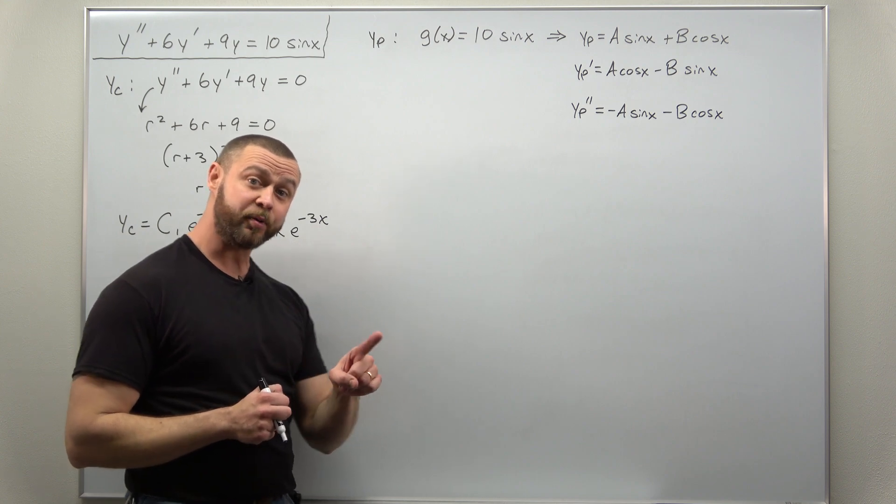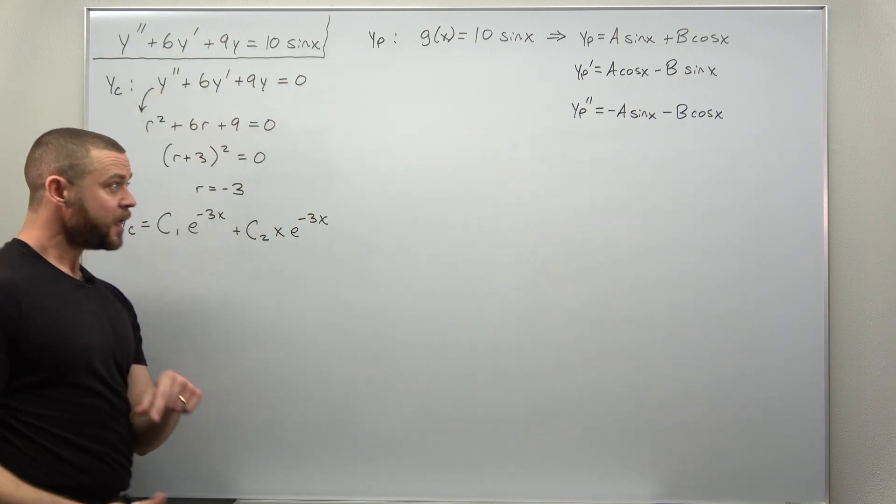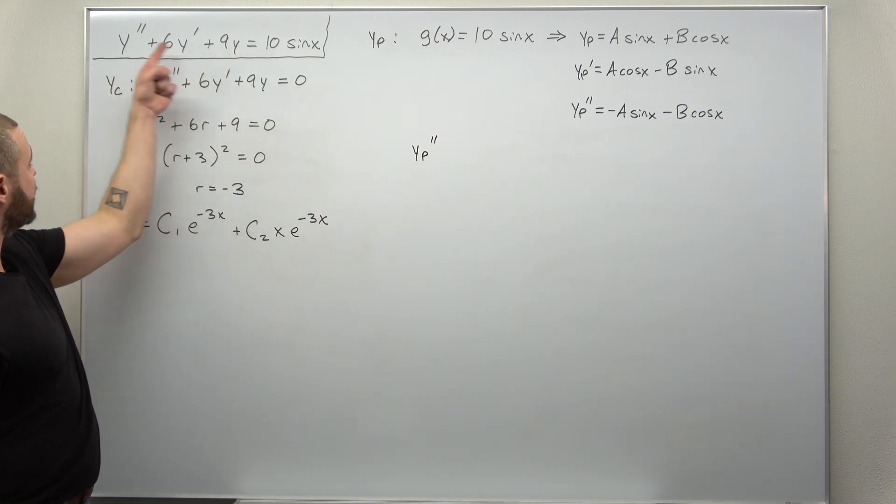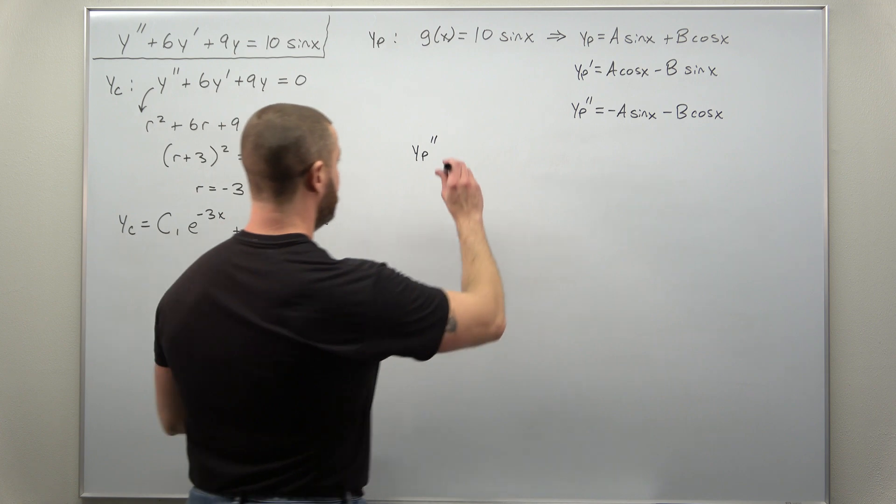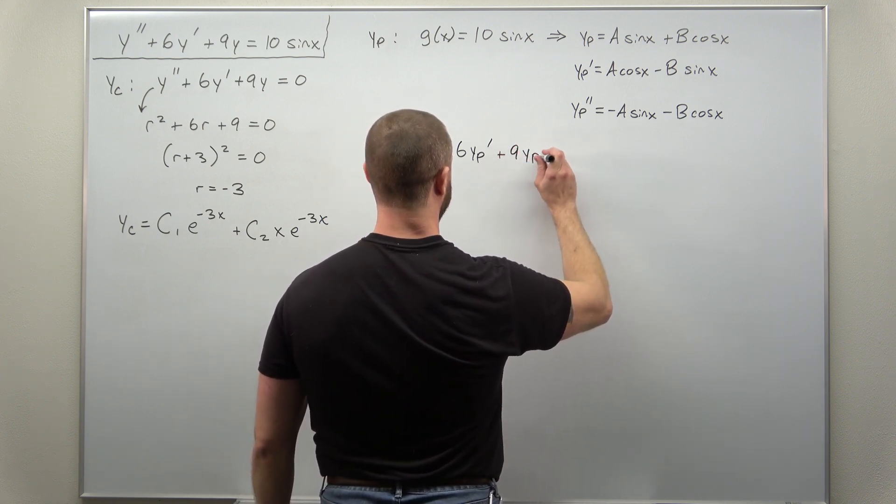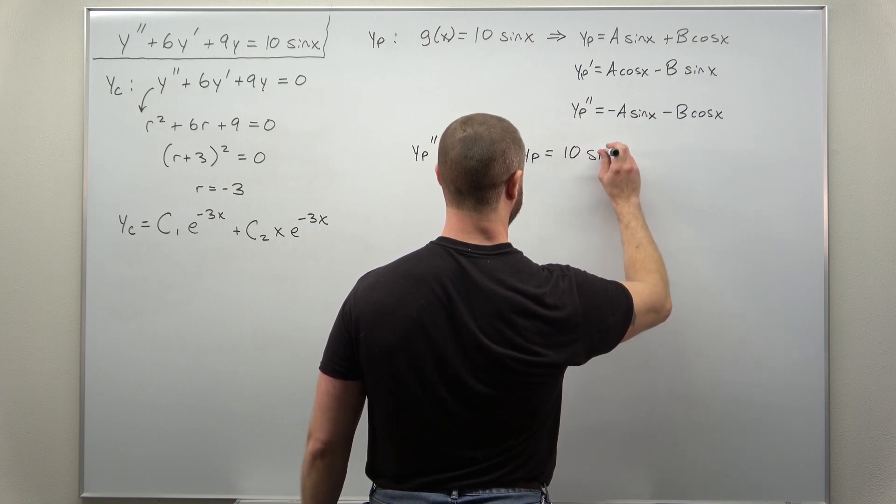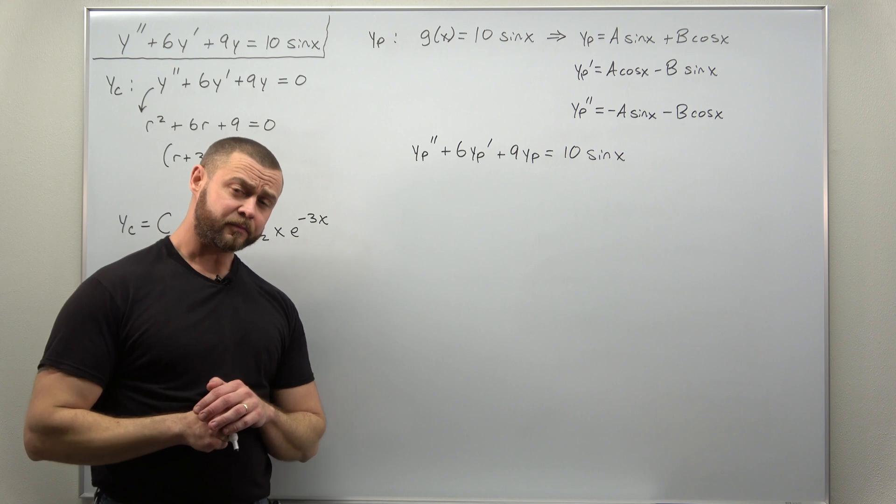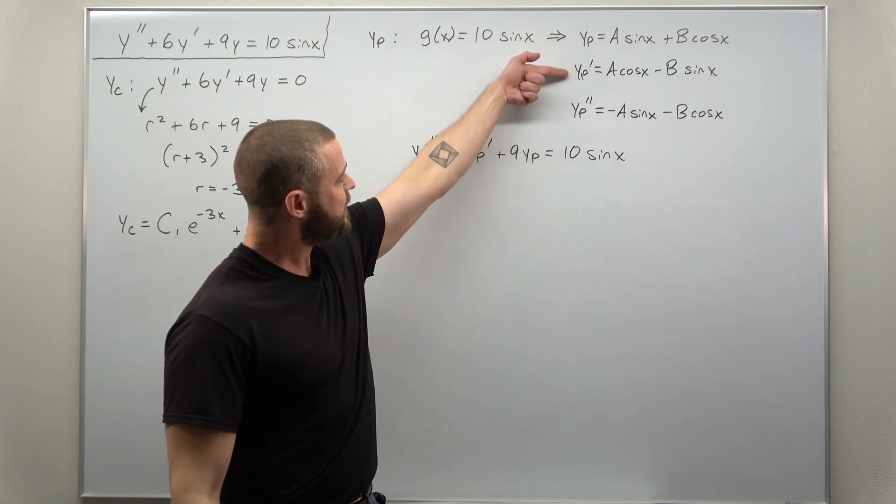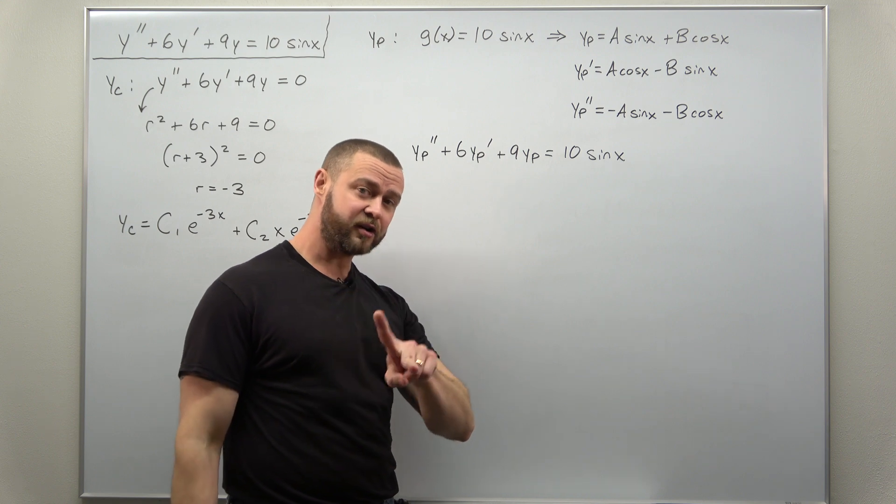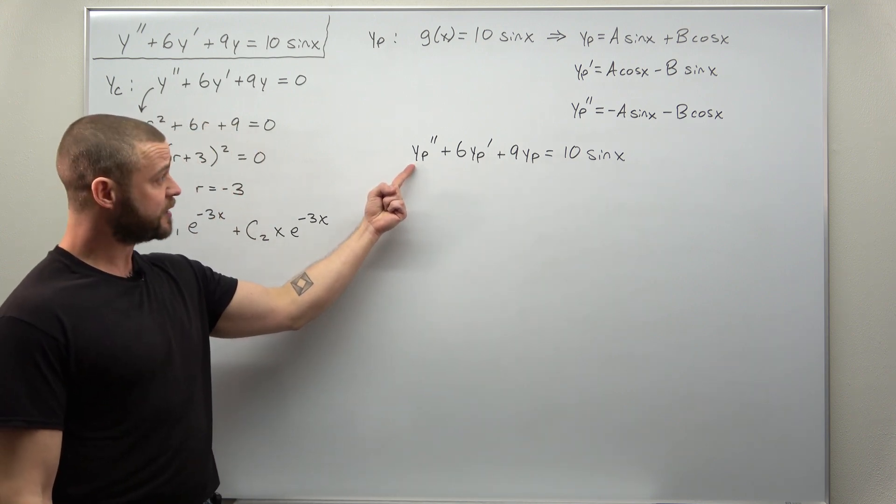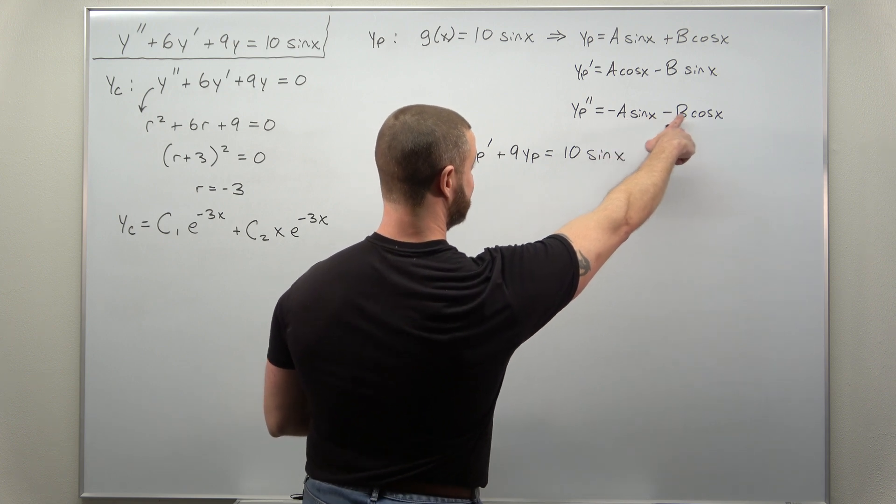We have everything we need to plug it all back into the non-homogeneous ODE. We plug in y p everywhere there's a y. So y p double prime plus six y p prime plus nine y p, and we want that to equal 10 times sine of x. This can get a little bit messy, but we'll take our time. Notice y p, y p prime, and y p double prime each contain two terms, a sine and cosine. Let's write this out. I'm going to plug in first my second derivative term: minus a sine of x minus b cosine of x.